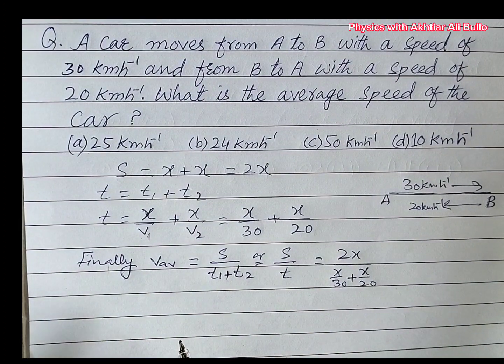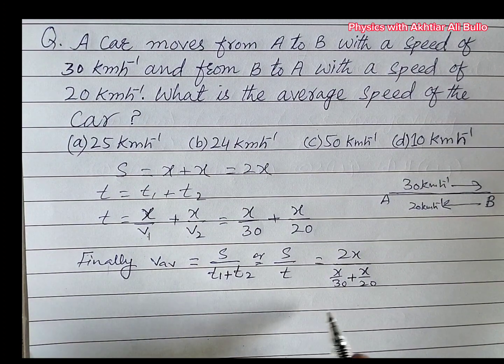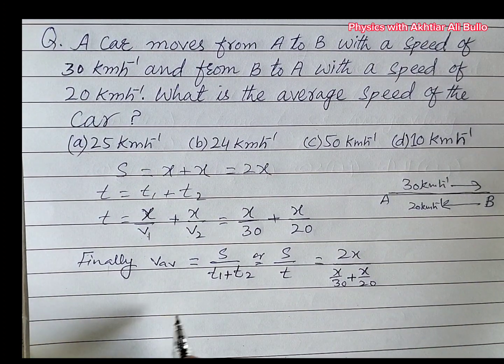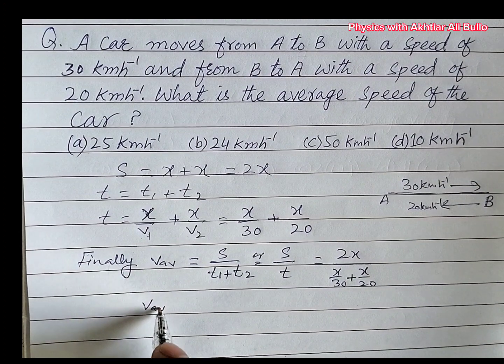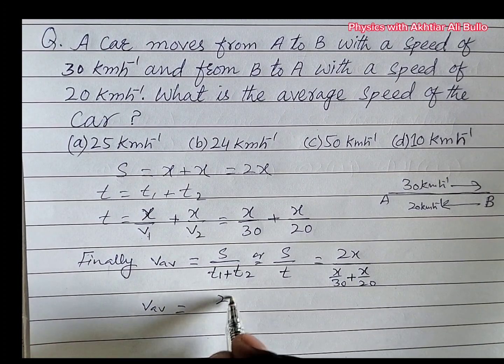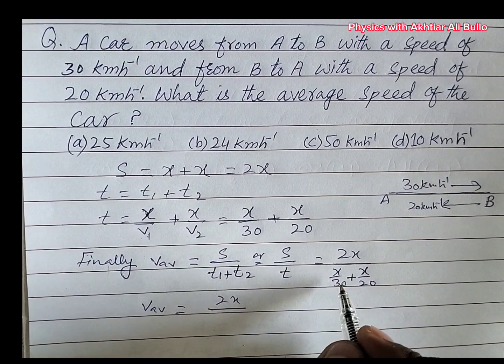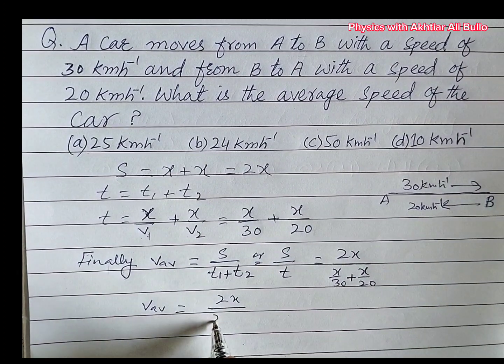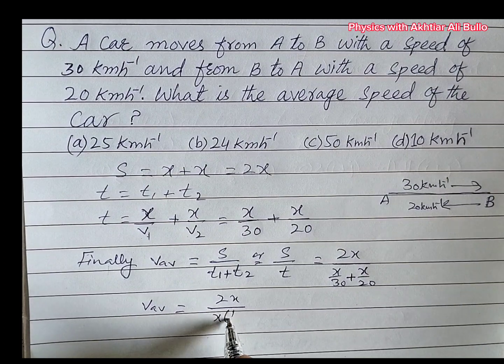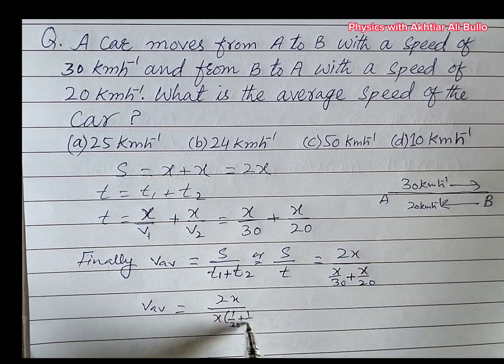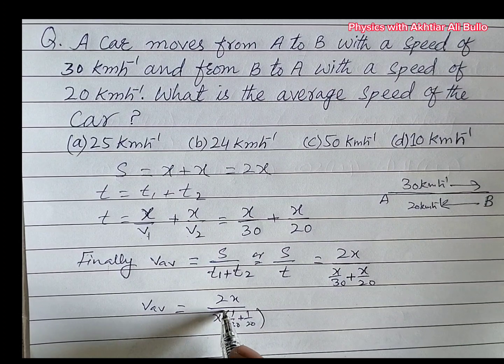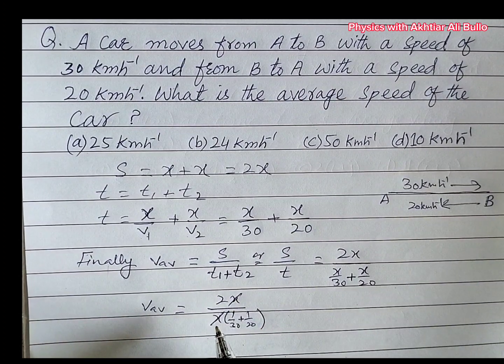So after simplifying this, x will get cancelled with x. So 2 upon, x upon 30 plus x upon 20. x will get cancelled.